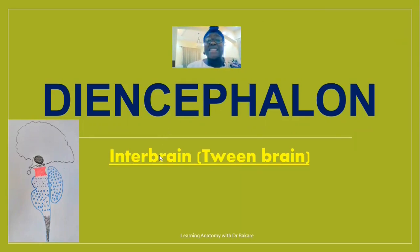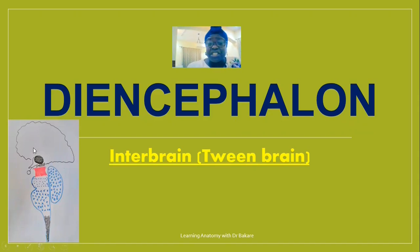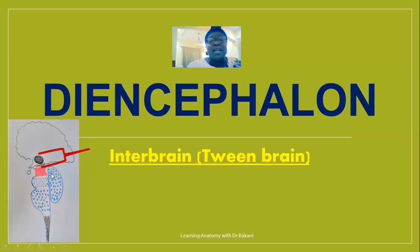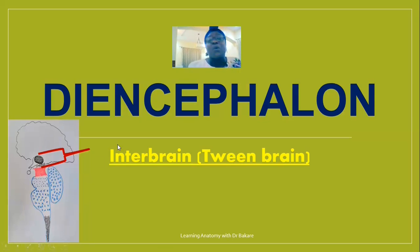The diencephalon is also referred to as the interbrain or the twin brain. It is referred to as the interbrain because it is a region located between the cortical region and the subcortical region. Looking at this image, you see the configuration of the brain — up here is the cerebral hemisphere, we have the midbrain highlighted in red, the pons, the medulla, and behind we have the cerebellum.